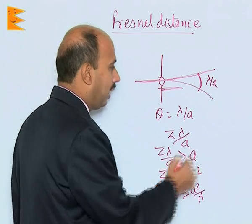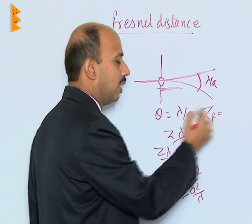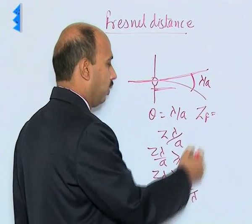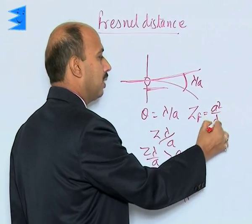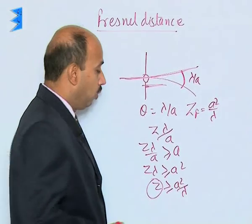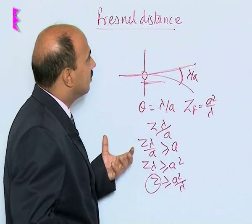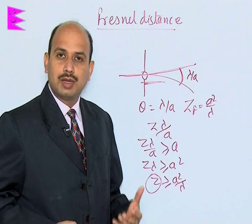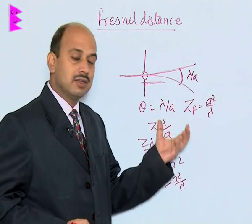This z is known as the Fresnel distance, z_f, which equals a squared by lambda. The Fresnel distance decides the validity of ray optics — when you exceed this distance, the diffraction pattern or the spreading of light becomes more significant.